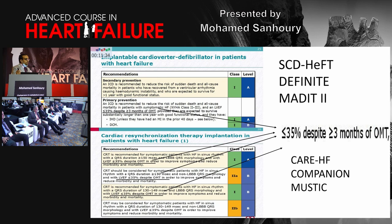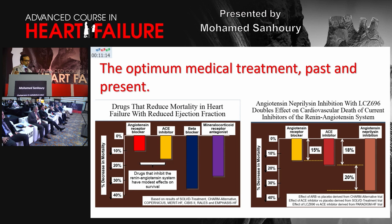If we review the guidelines for device-based therapy, we find the fixed requirement: ejection fraction less than 35% despite at least three months of optimal medical therapy. But what is optimal medical therapy? Ten years ago, it included ACE inhibitors or ARBs, beta blockers, and mineralocorticoid receptor antagonists. These drugs have a well-established role in preventing cardiovascular deaths and heart failure hospitalizations. After the introduction of sacubitril/valsartan, it provided more than 20% greater reduction in mortality compared to ACE inhibitors or ARBs.